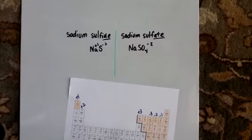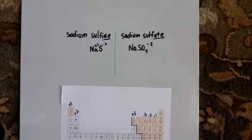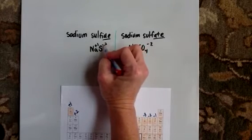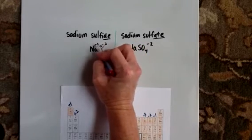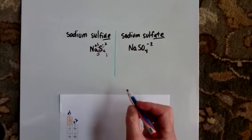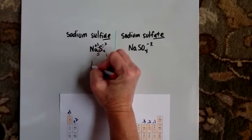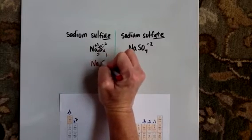So on this one, the 2 crosses down here, the 1 there. Remember, we don't do anything with those charges - we just bring down the numbers. This does not reduce. This is Na2S.